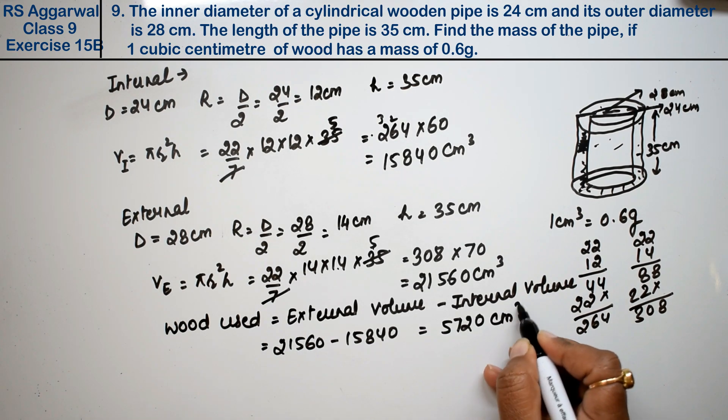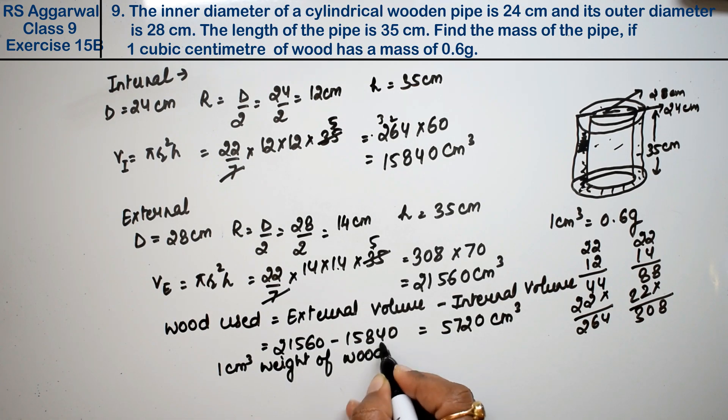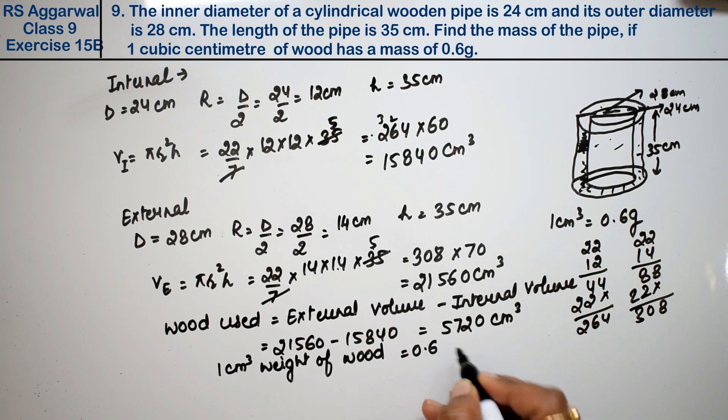This equals 5,720 cm cube. Now we know that 1 cm cube weight of wood is equal to 0.6 grams equivalent, right friends. So this much, 5,720 cm cube weight of wood, how much will it equal? When one's value is given and we need to find more, we multiply.